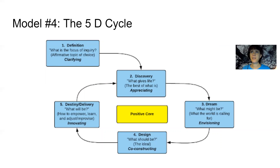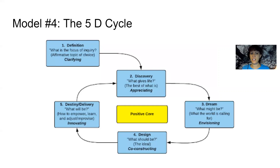Now I saved the most intricate one for last, and that is the 5D cycle. If you research it, you might see in appreciative inquiry the 4D cycle. I've seen it in Michelle McQuaid's book on how to have an appreciative inquiry summit where she has 6Ds. But the one you'll see most often is the 5D — the fifth D being 'definition' added before the original four. And I'll tell you about that sixth extra credit D in a minute.